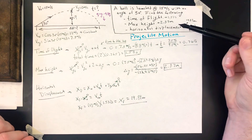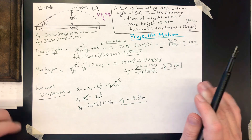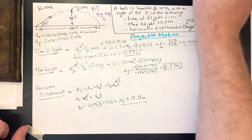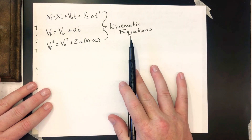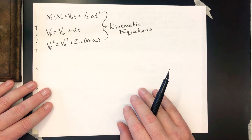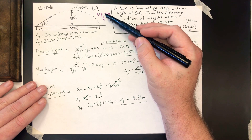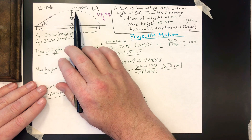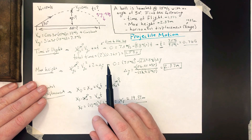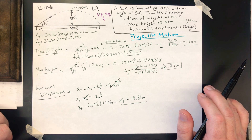So we've described this projectile pretty well: we know how long it's in the air (1.53 s), how high it goes (2.87 m), and how far it travels (19.89 m). This is an example of a projectile motion problem — we're applying kinematic equations from one-dimensional motion to both the y direction (up and down) and x direction (side to side), keeping in mind that acceleration only applies in y, that vertical velocity is zero at the top, and that x velocity is constant. If you have any questions, just send me an email. Hope you're having a good day!